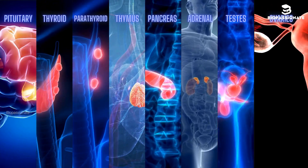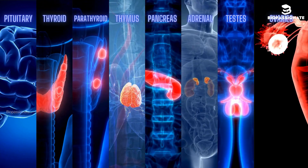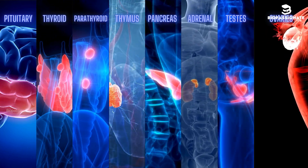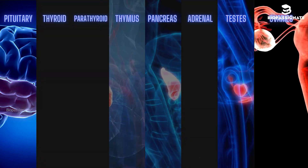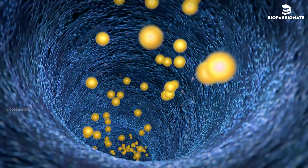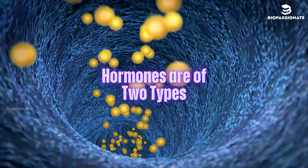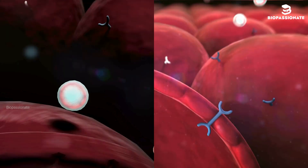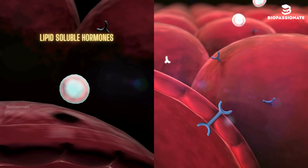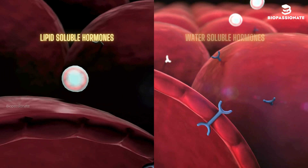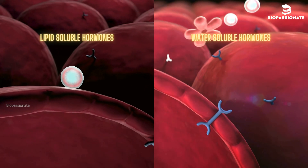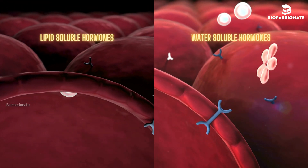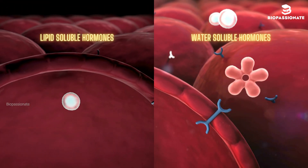These are endocrine glands which produce various hormones. There are two main types of hormones based on their solubility: lipid-soluble and water-soluble. Each type has a unique mode of action.